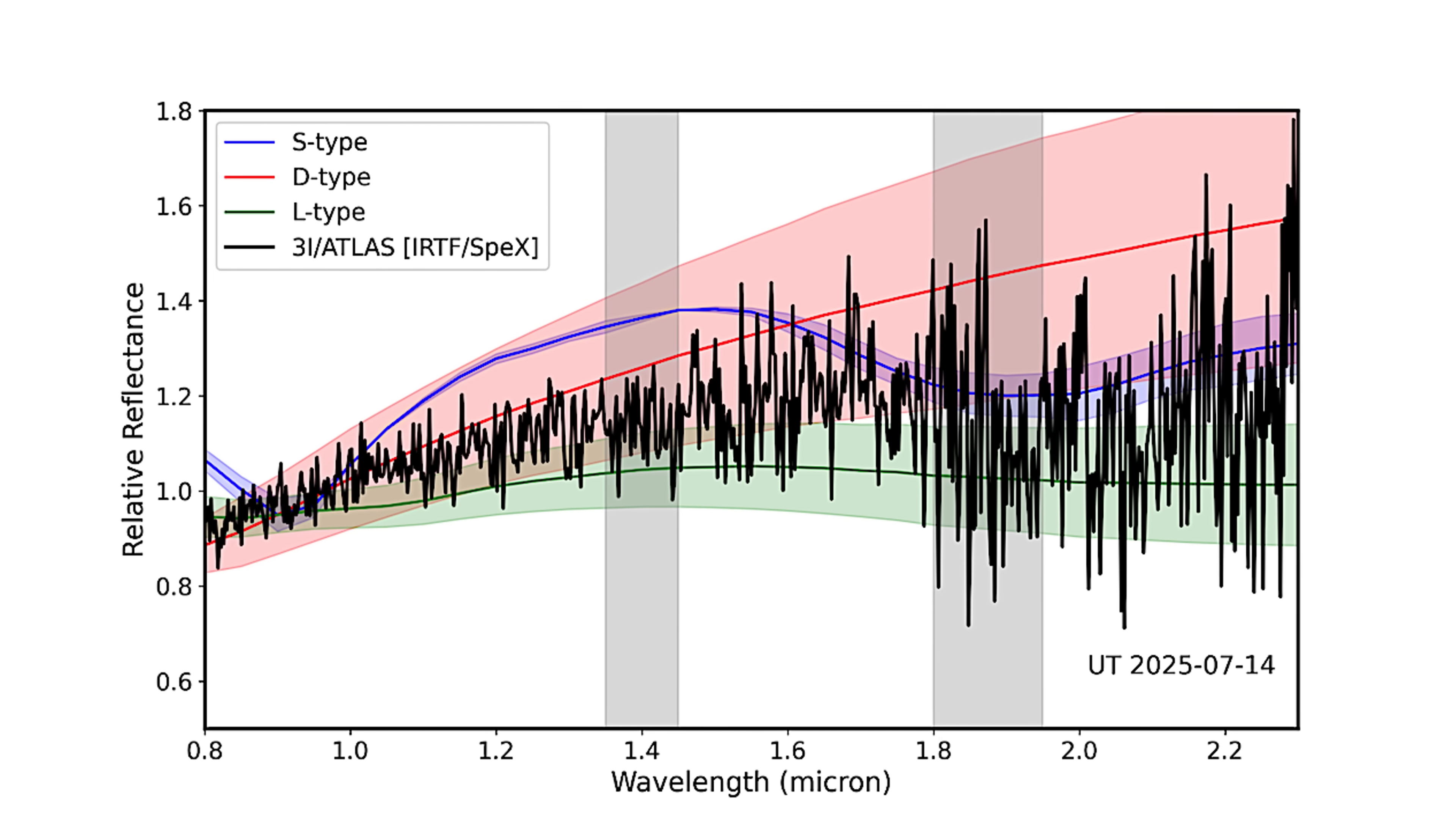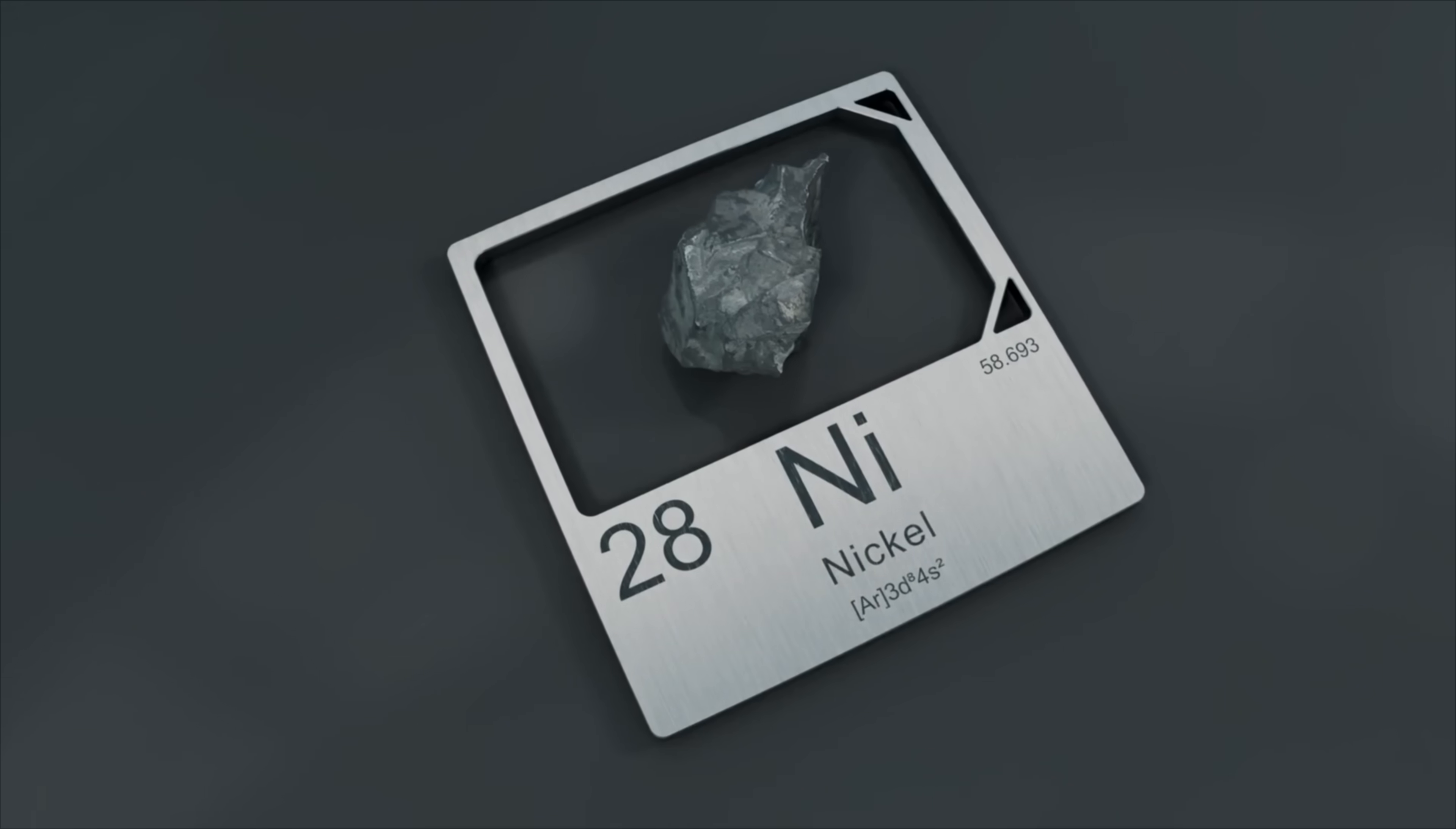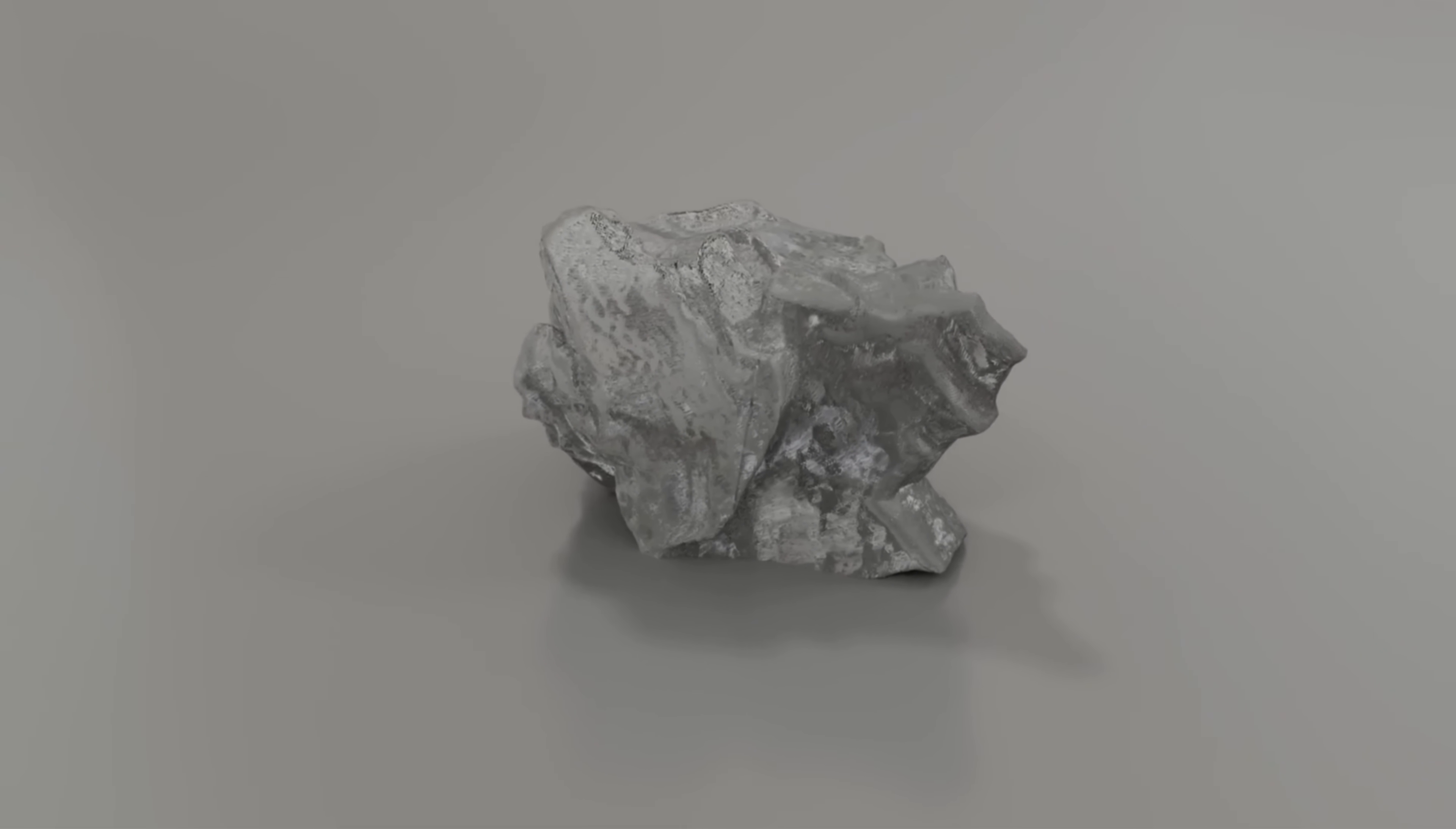Adding to the mystery are spectrographic findings. Researchers detected nickel in the coma of 3i Atlas, without any accompanying iron. In nature, nickel and iron are found together, and even then only about 30 comets have ever shown trace metals in their comas at all. The presence of pure nickel is inexplicable under natural models.